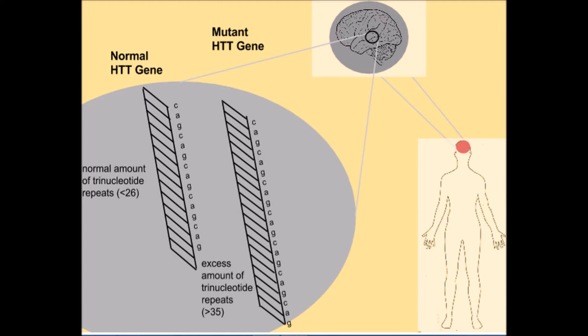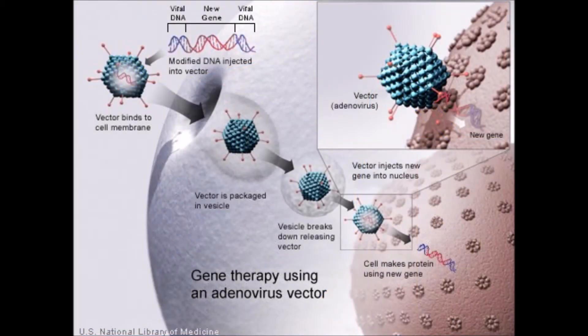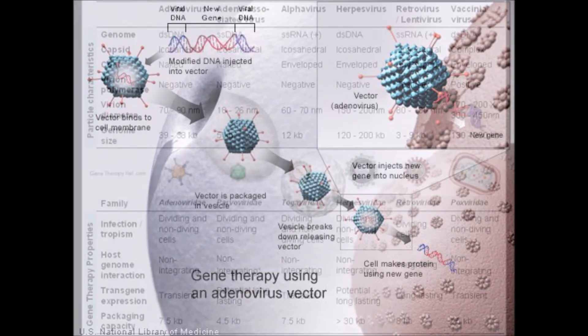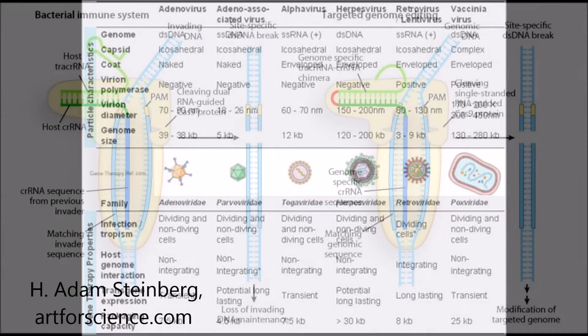which are toxic to the neurons they build up around. Gene therapy is a relatively new medical procedure which involves inserting the correct gene in a viral vector and in turn inserting the vector into an organism to transfer the correct genes. There are multiple types of viral vectors and each have their own properties.